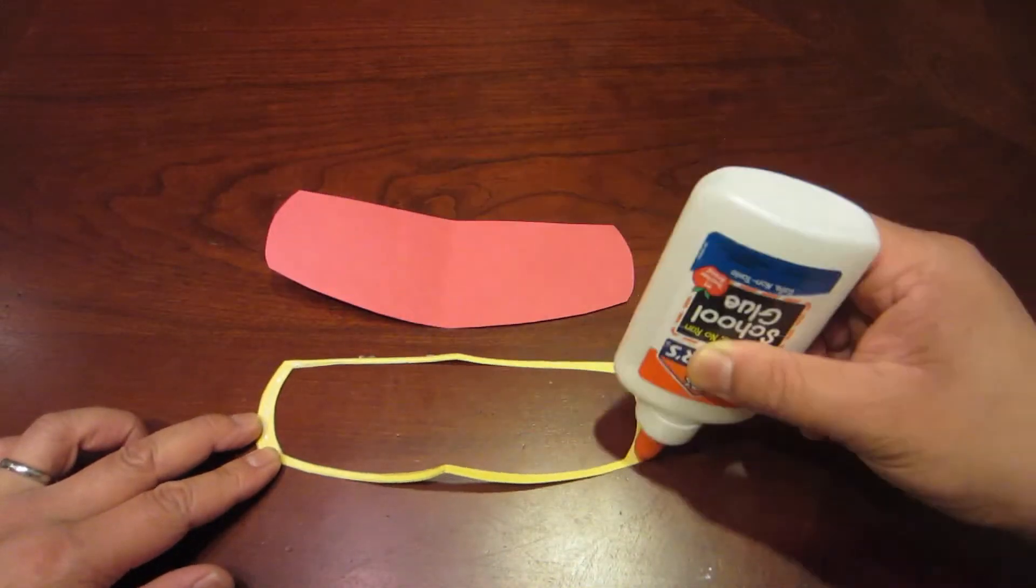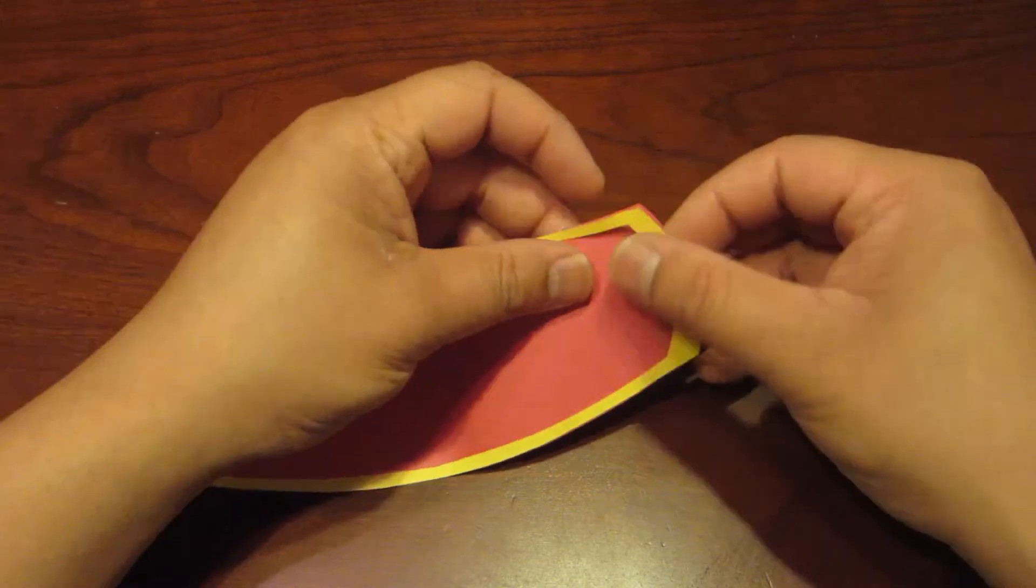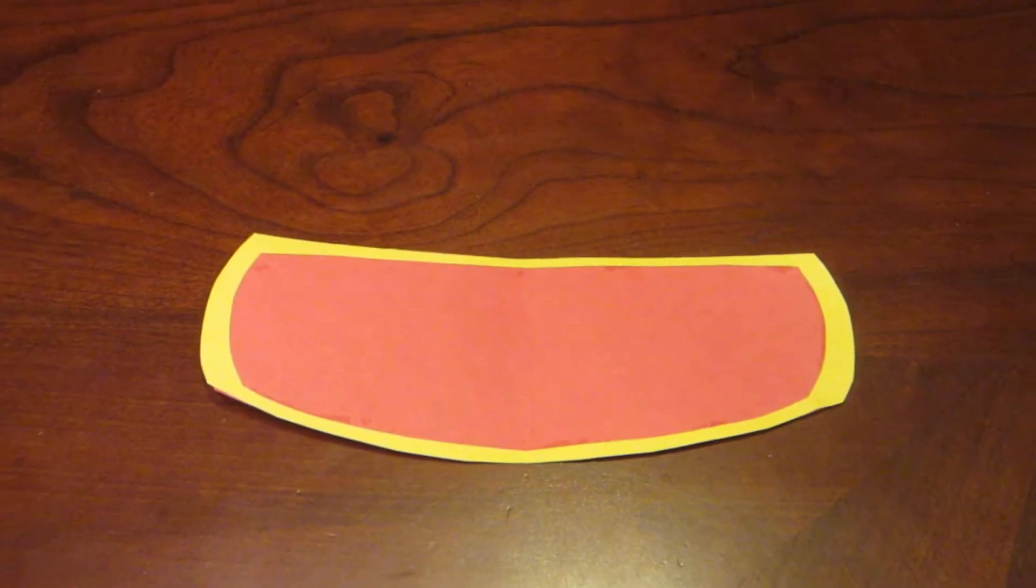Then glue the yellow border onto the red piece like this. When done, your visor should look like this.